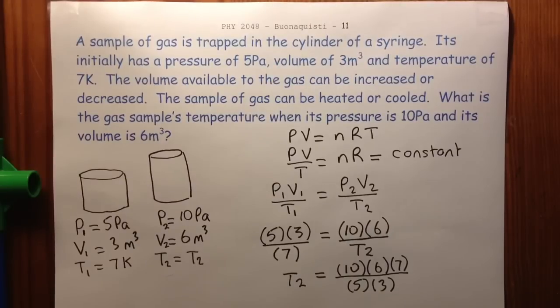And then I get my calculator, and I put my numbers in. I go 10 times 6 times 7, enter, divided by 5, enter, divided by 3, enter. And I get an answer of 28, and that's going to be Kelvin.